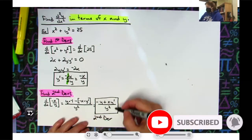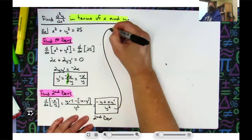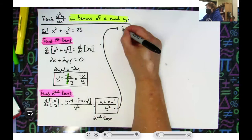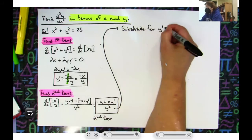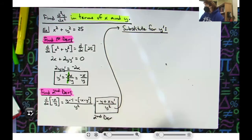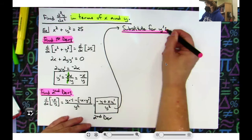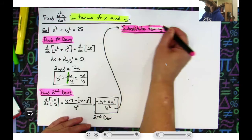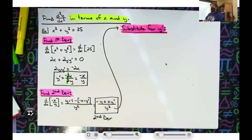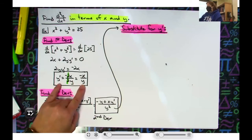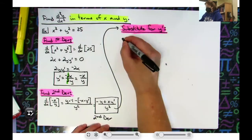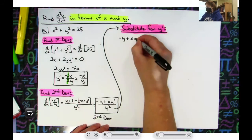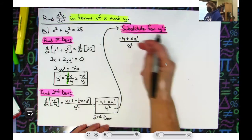So the next step is to substitute for y prime — I'm going to substitute something in to get rid of it. Where do I know what's equivalent to y prime? It's negative x over y, which is what we found in step one. So I'm going to write my second derivative: negative y plus x·y prime, all over y squared, and now substitute.